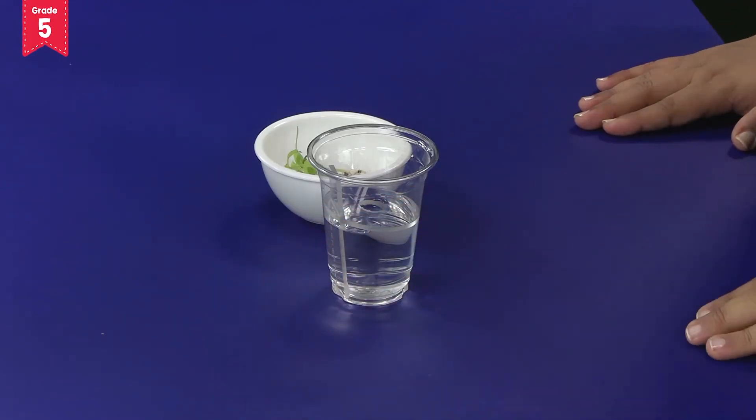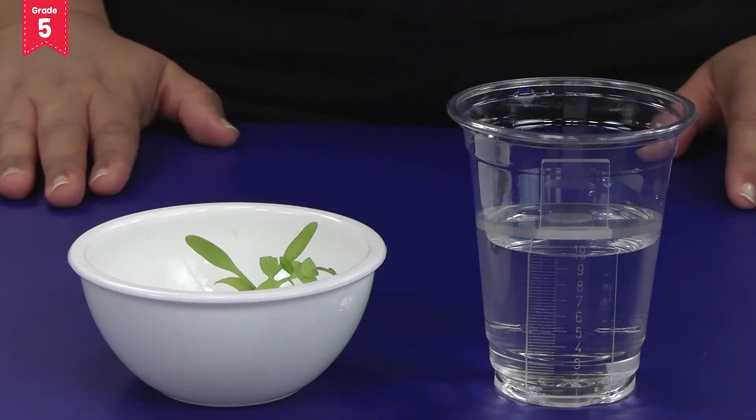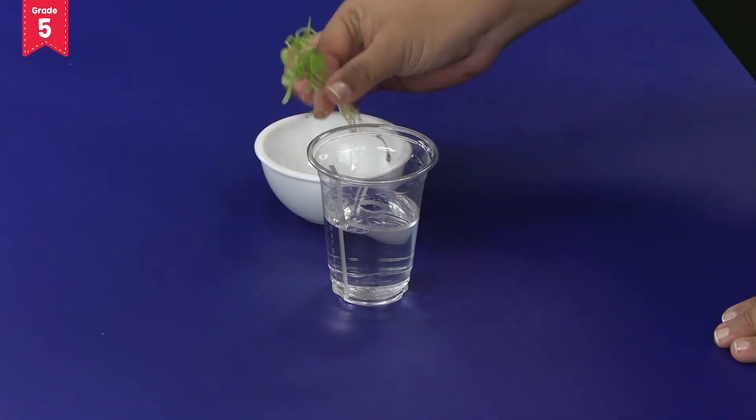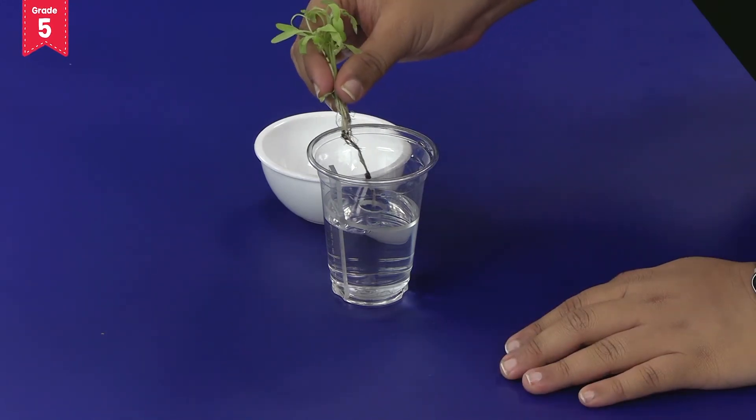Also make sure that the level of water is up to the topmost marking on the scale. Now insert the plant with its roots into this hole of the stand like this.